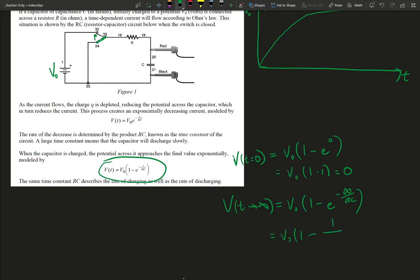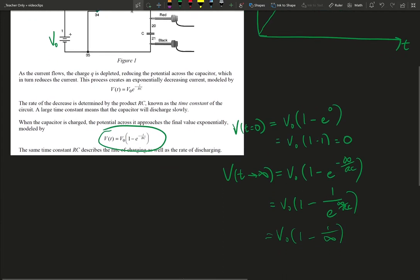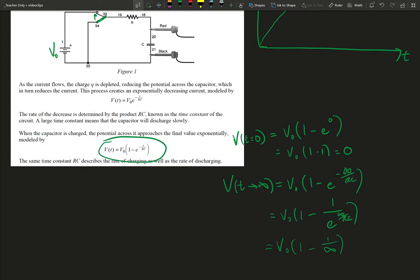So what we effectively get is V0 times 1 minus 1 over a really big number. I'll just call it infinity here as my symbol, not for infinite, but just really big number.